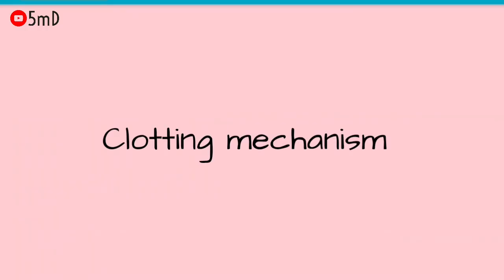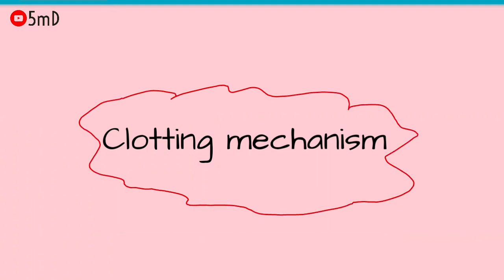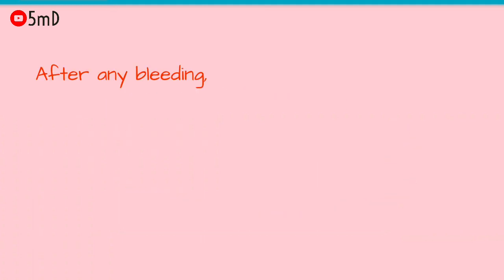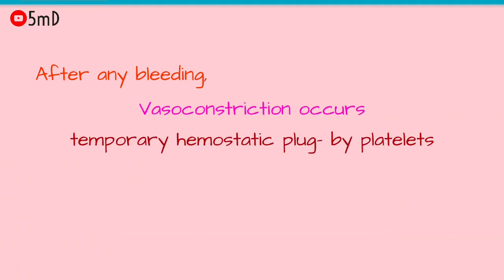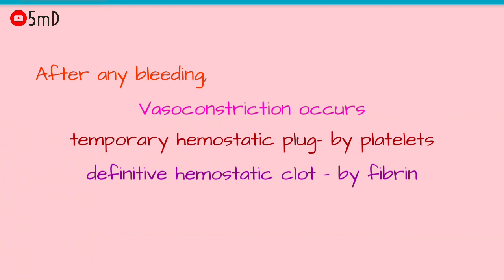The clotting mechanism describes how blood clots after an injury. First, vasoconstriction occurs, after which a temporary hemostatic plug is formed by platelet aggregation, following which a permanent hemostatic plug is formed by the action of clotting factors and the formation of fibrin. Where is fibrin formed, how is it formed, and what is the process which leads to its formation?